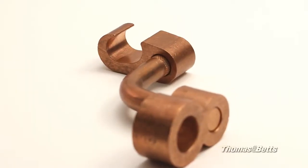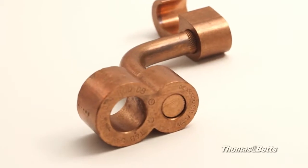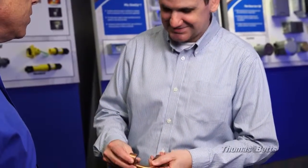A well-engineered grounding system is a key to power quality in a data center. Thomas and Betts Blackburn Easy Ground System allows electricians to quickly install grounding products to meet both the needs of new construction or a repurposed data center.